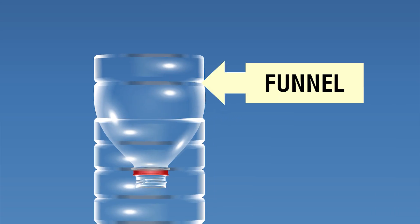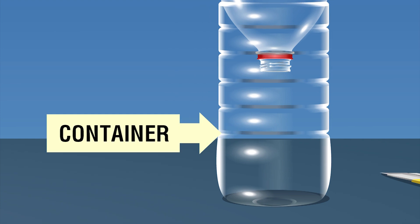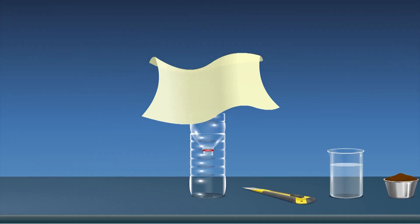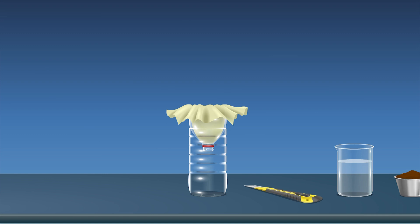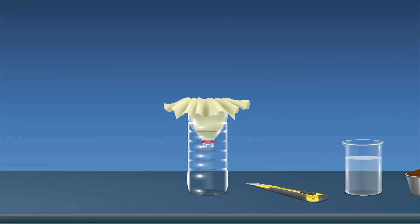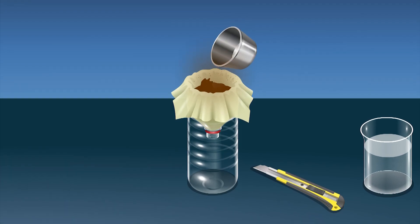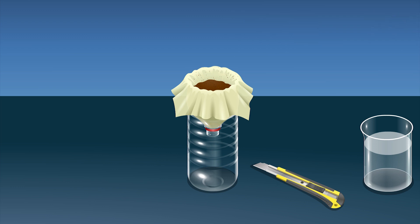The upper part will be used as a funnel and the lower part as a container. Place a piece of cloth in the improvised funnel. Now add some soil over the cloth till it fills two-third part of the funnel.